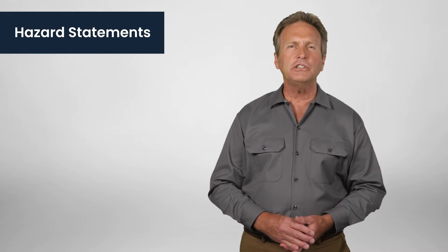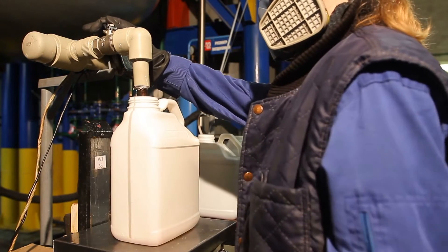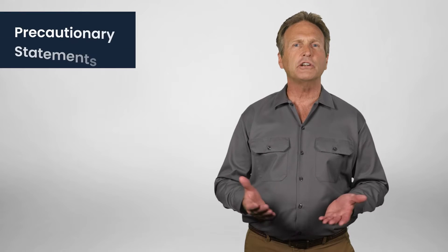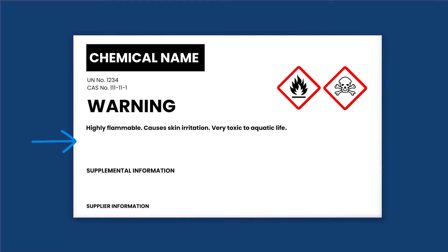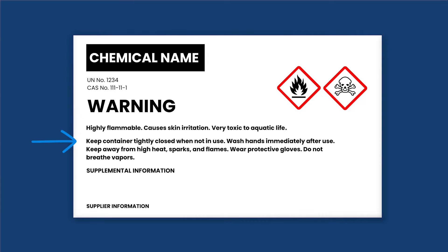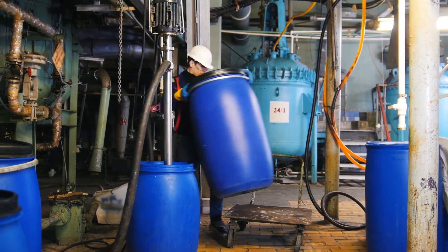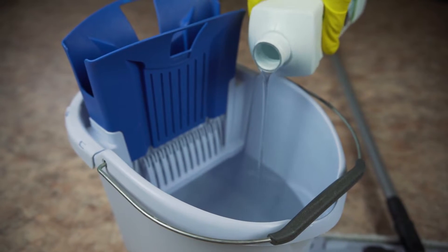Hazard statements are sentences that describe the nature of the chemical's hazards, such as highly flammable, causes skin irritation, or very toxic to aquatic life. They give a precise description of the risk involved in handling the chemical. Precautionary statements are like guides for action, briefly communicating how to prevent exposure, what to do in case of exposure, how to store the chemical safely, and how to dispose of it correctly. These are your go-to guidelines for safe handling and use.